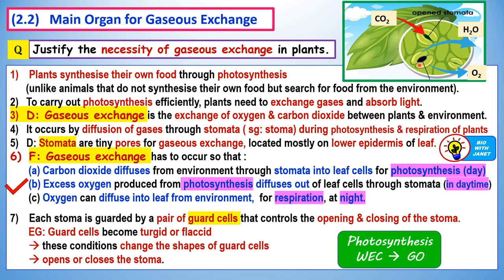Gaseous exchange occurs by diffusion of gases through stomata during photosynthesis and respiration in plants. Stomata are tiny pores or openings for gaseous exchange to occur, and they are located mainly on the lower epidermis or the lower surface of the leaf for eudicots — a type of plant called the eudicot.